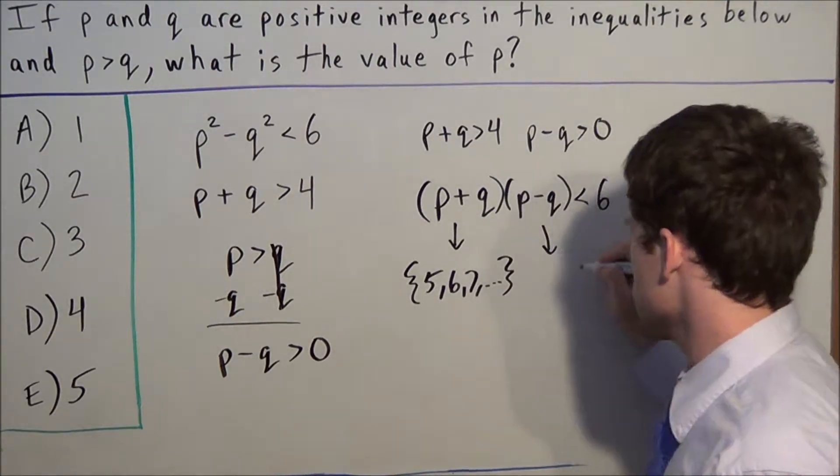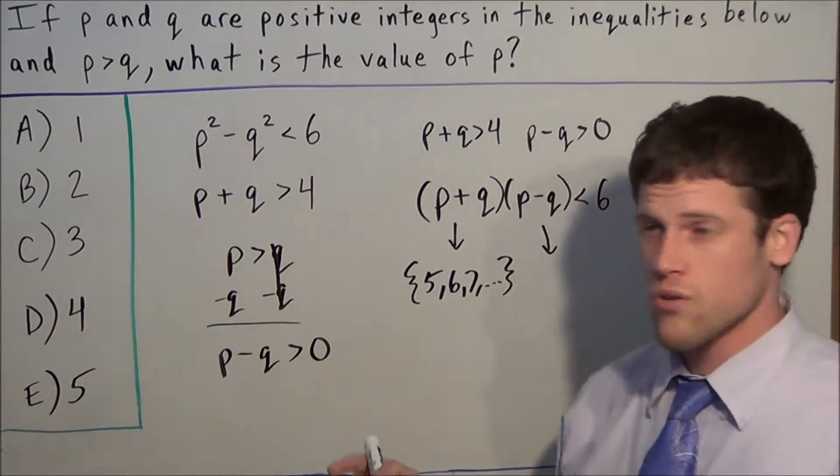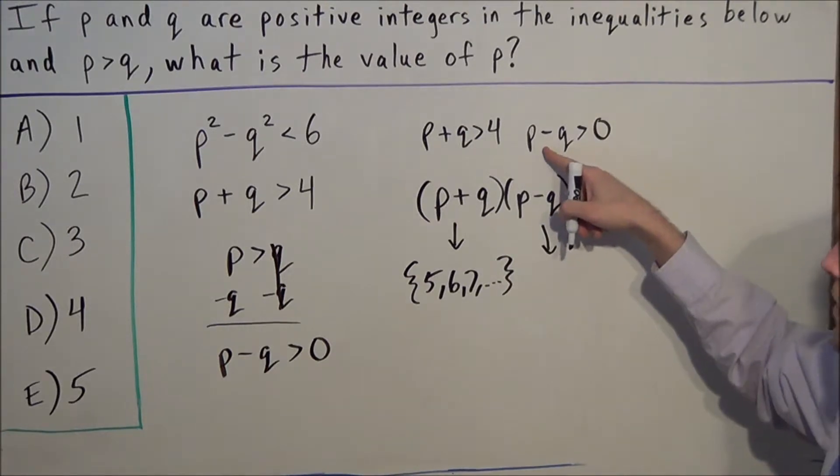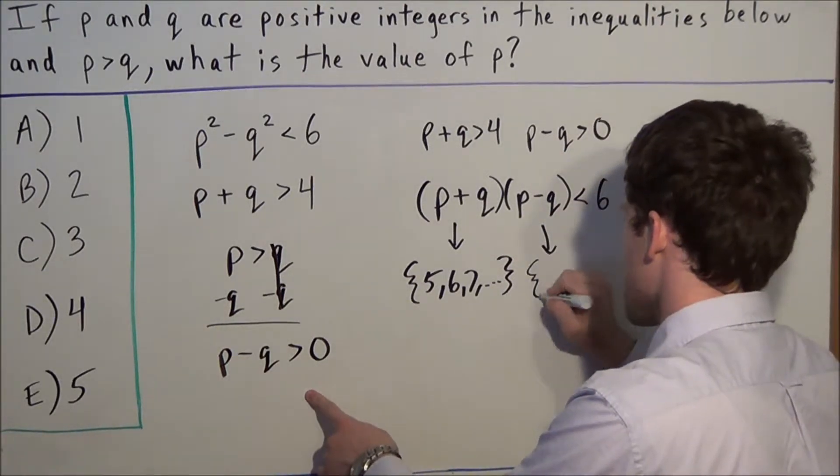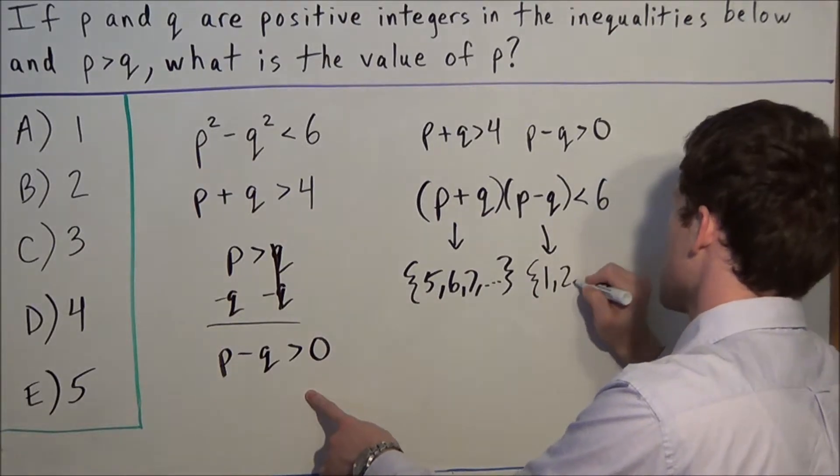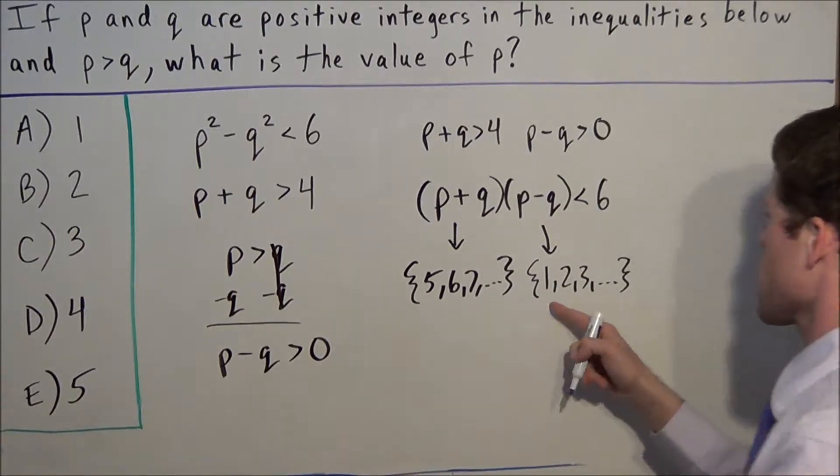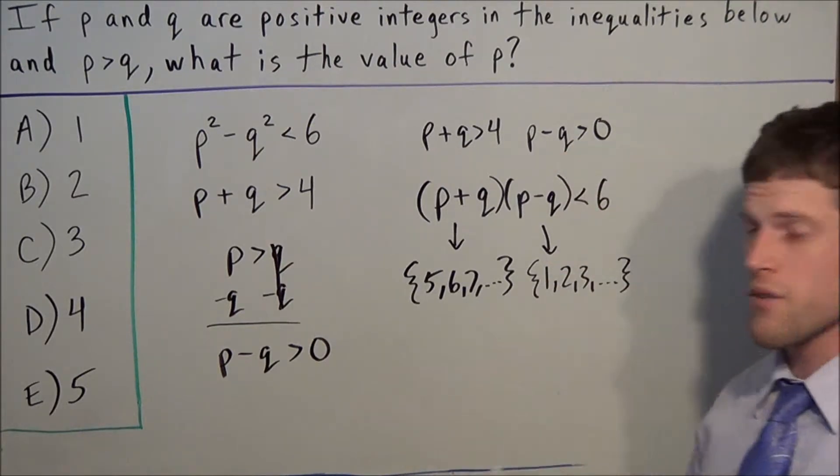For p - q, remember p and q are whole numbers, and p - q has to be greater than 0. So for the second factor, we consider the numbers 1, 2, 3, and so on - all whole numbers greater than 0.